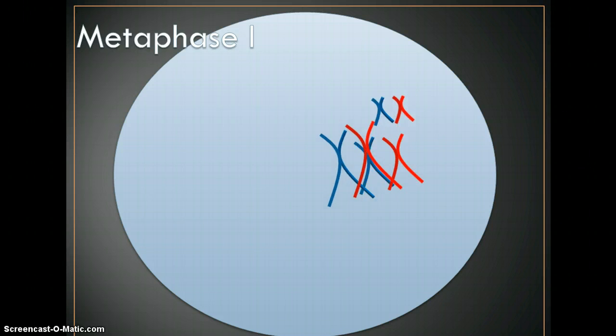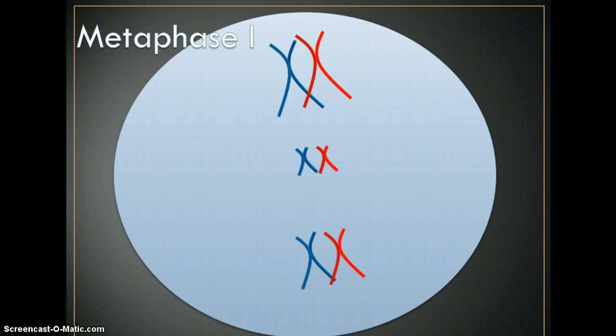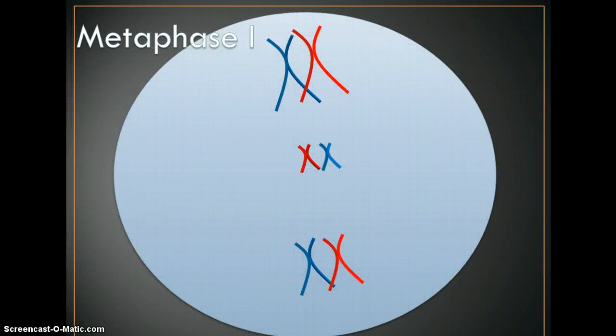Metaphase one is when these tetrads or homologous pairs line up on the mid plate of the cell. And a key idea here is how the tetrads line up. Notice here that all the blue are on one side and the red are on the other. That's completely by chance. In real life these chromosomes or tetrads will line up completely independent of each other. As depicted here, now we have the blue on the left side, the red. So we've switched this one so the red and the blue have switched places here. And this is actually the idea of independent assortment or the law of independent assortment. So each tetrad will assort independent of all of the other chromosomes as they line up on the mid plate.